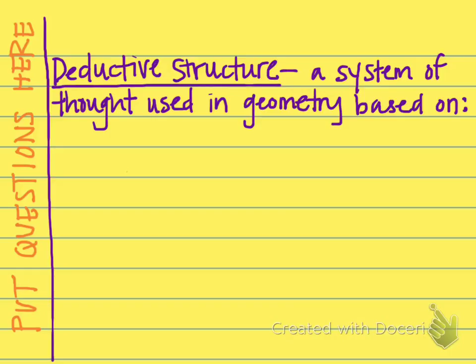There are four parts to deductive structure. Deductive structure is the system of thought used in geometry, and it is based on four things. These four different things are undefined terms, assumptions, definitions, and theorems, and these can be used on the right-hand side of a two-column proof in the reasons column.